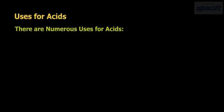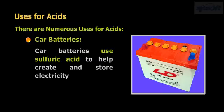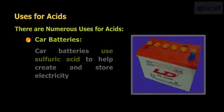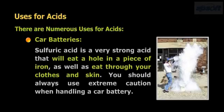Uses for acids: There are numerous uses for acids. Car batteries use sulfuric acid to help create and store electricity. Sulfuric acid is a very strong acid that will eat a hole in a piece of iron as well as eat through your clothes and skin. You should always use extreme caution when handling a car battery.